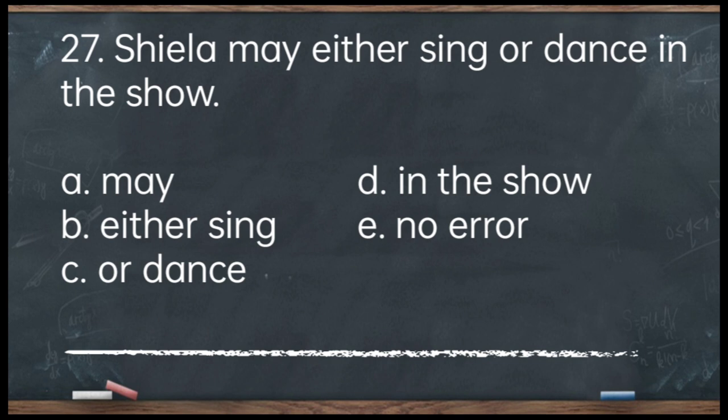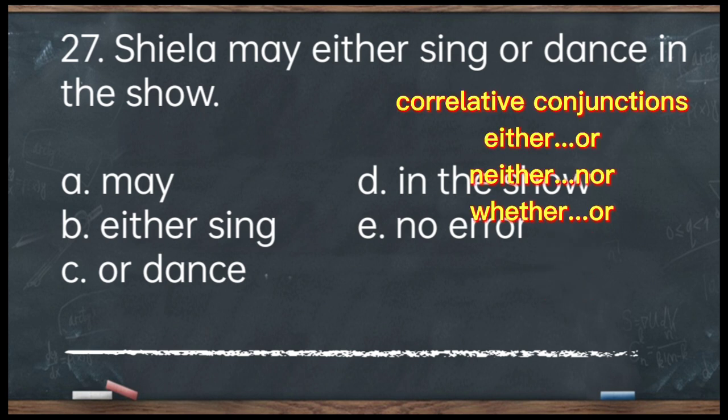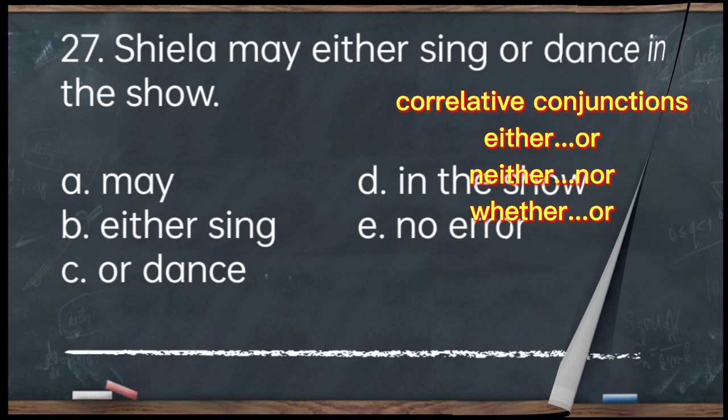Number 27. Sheila may either sing or dance in the show. A. May. B. Either sing. C. Or dance. D. In the show. E. No error. The answer is letter E — no error. Remember, the correlative conjunction 'either...or' always goes together, just like 'neither...nor,' 'whether...or,' and so on.